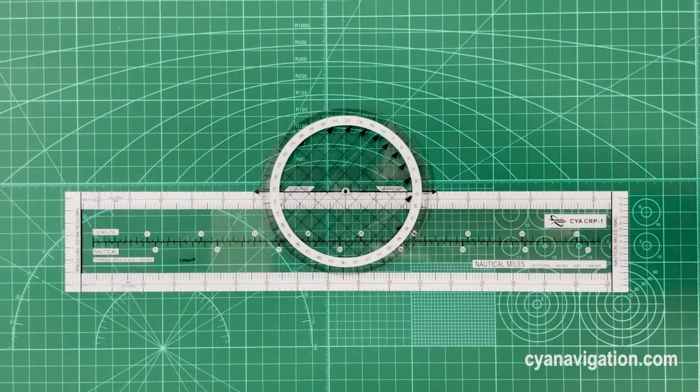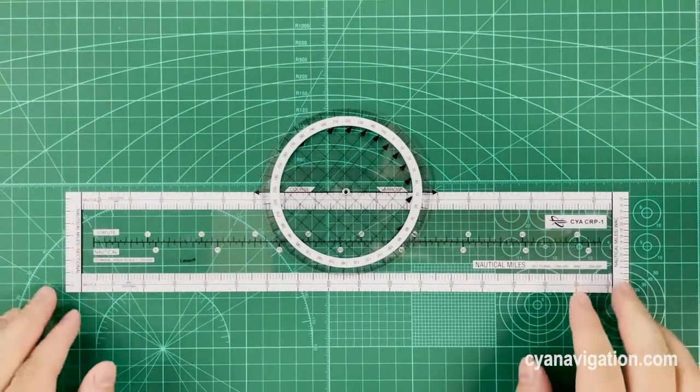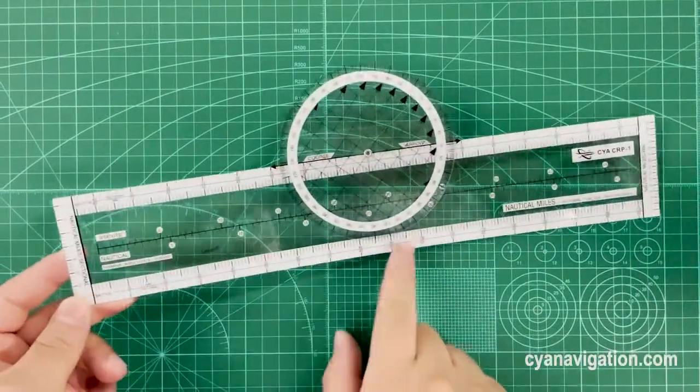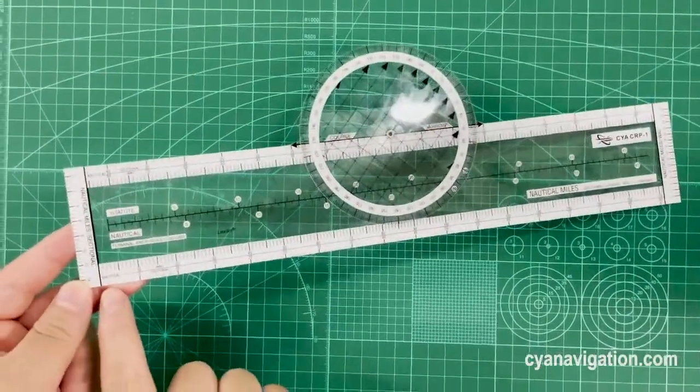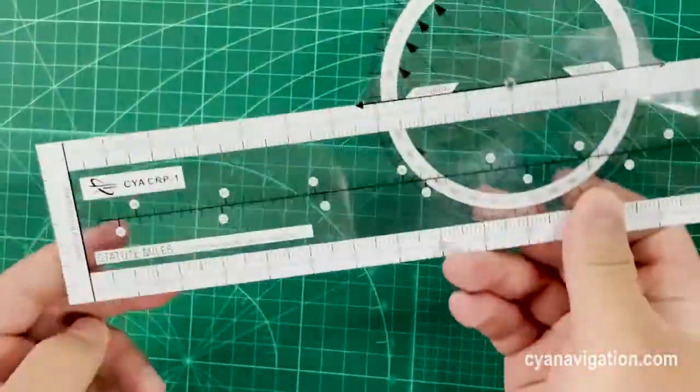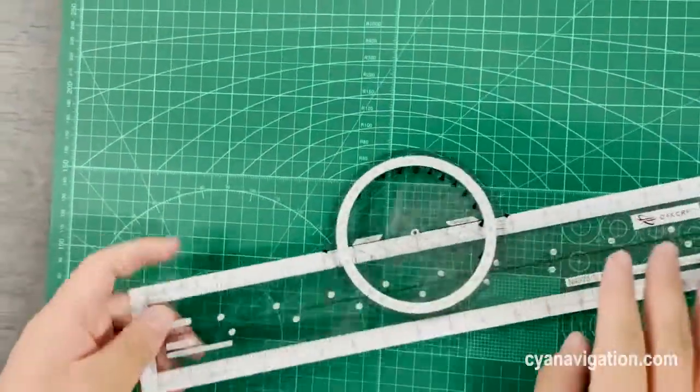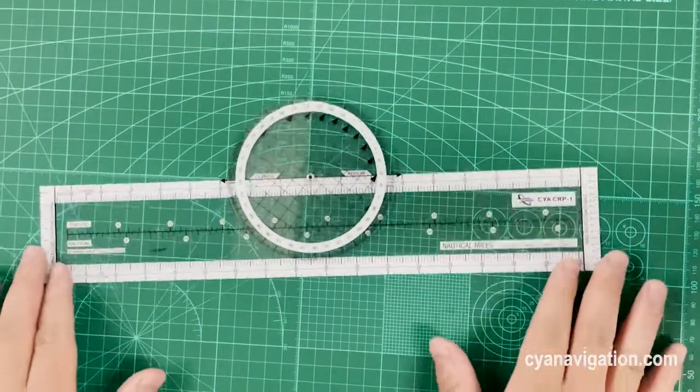Okay, let's see how to use this rotating plotter. It's very simple and easy. We are using this side for reading the nautical miles and another side for statute miles.